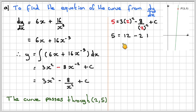So it's going to give you 5. 2² is 4 times 3, which gives you 12. Minus 8 divided by 4 will give you 2, plus c. So 5 = 10 + c, and therefore c = -5. So the curve equation, our particular solution, will be y = 3x² - 8/x² - 5.